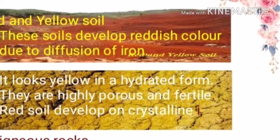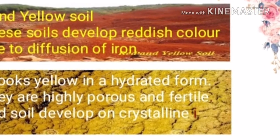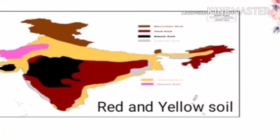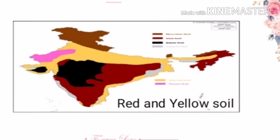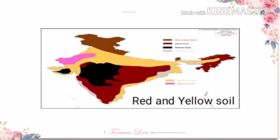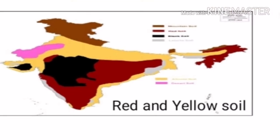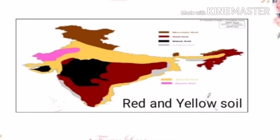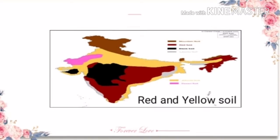Red and yellow soils are found in the eastern and southern parts of the Deccan Plateau, in parts of Odisha, Chhattisgarh, the southern part of the Middle Ganga plain, and along the piedmont zone of the Western Ghats.